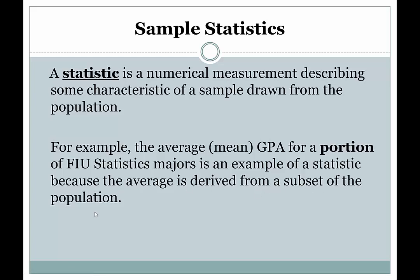Instead of looking at every FIU statistics major, you're only looking at a subset or a small portion of them. You calculate an average GPA for that group, and that average is a statistic because it doesn't describe an attribute of the population — it describes an attribute, or characteristic, of the sample.